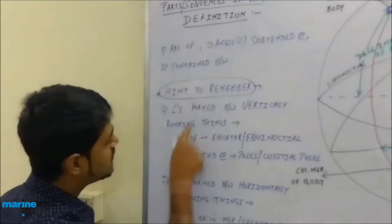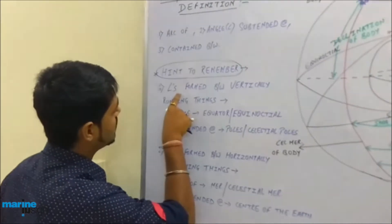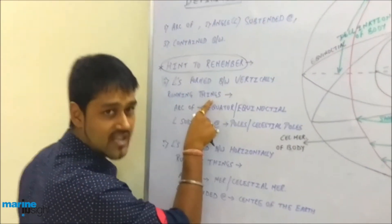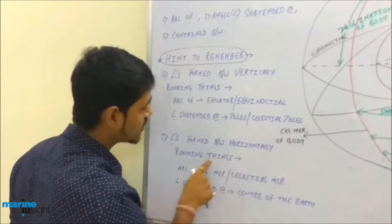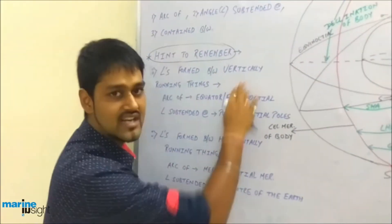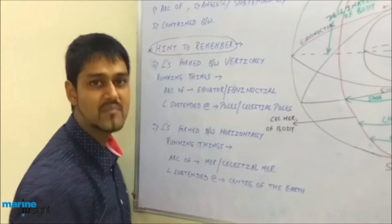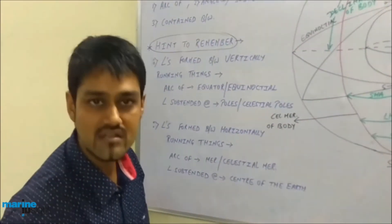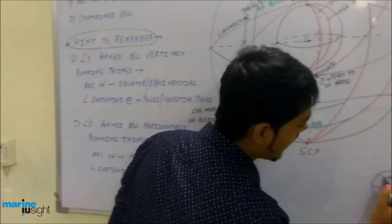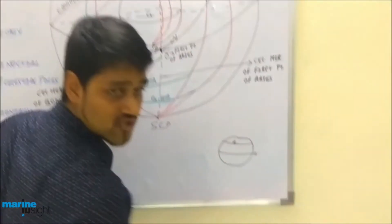Whether the angle you are going to define is formed between vertically running things or between horizontally running things. Vertically running means meridians and horizontally running means latitude circles. When I talk of latitude, obviously latitude's angle is always formed between horizontally running things.